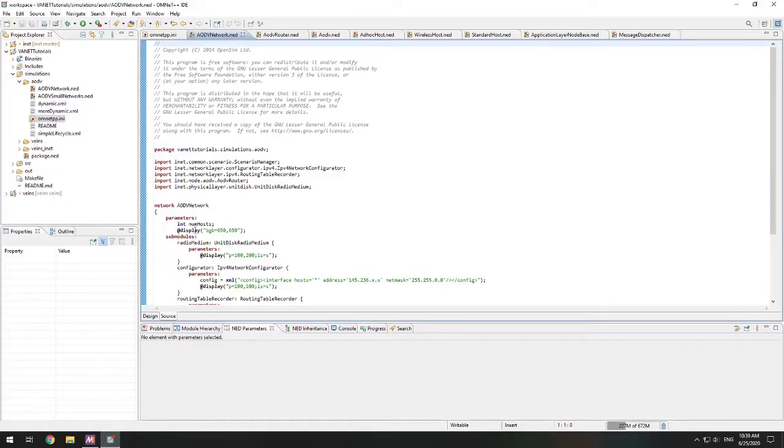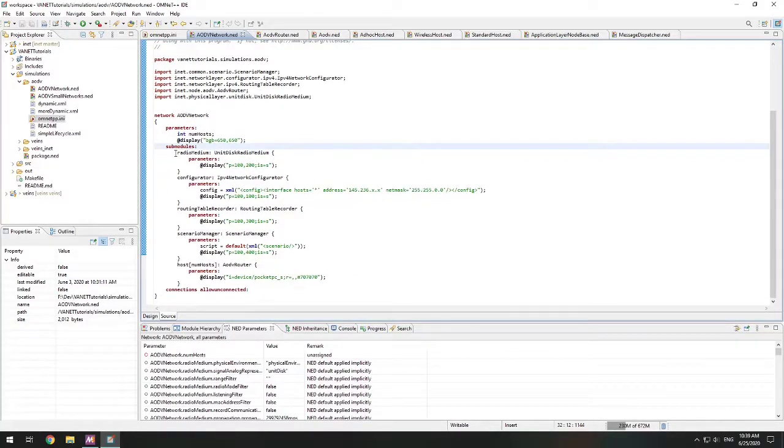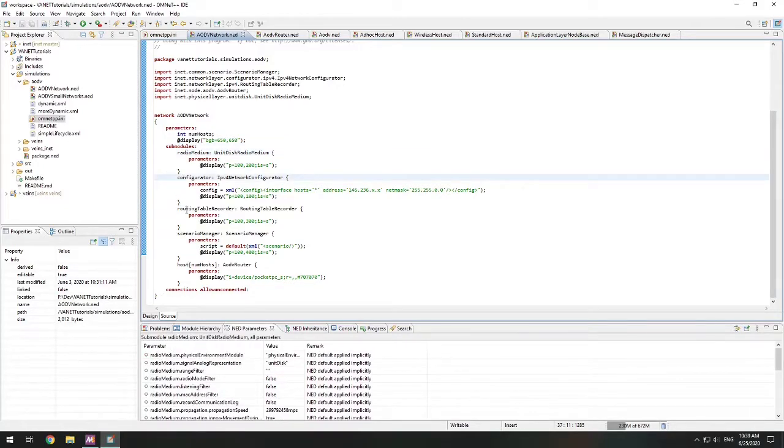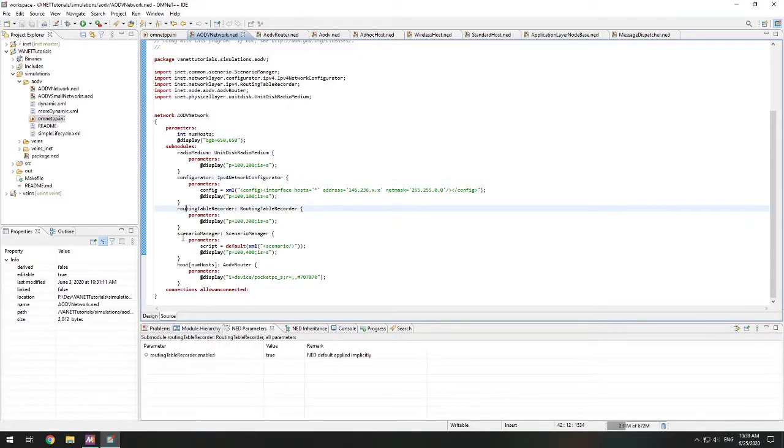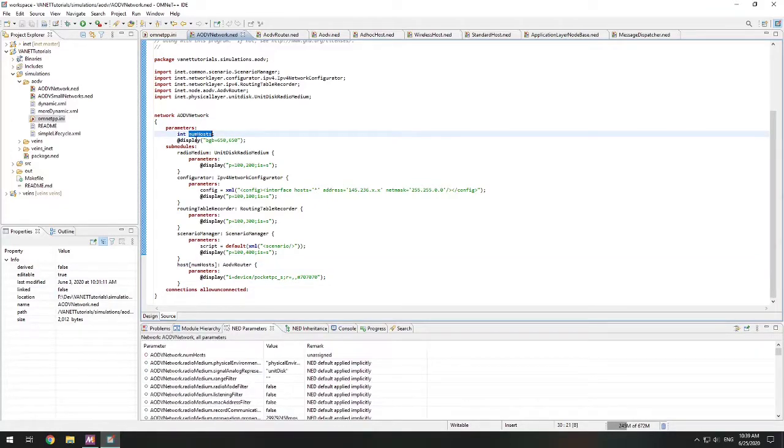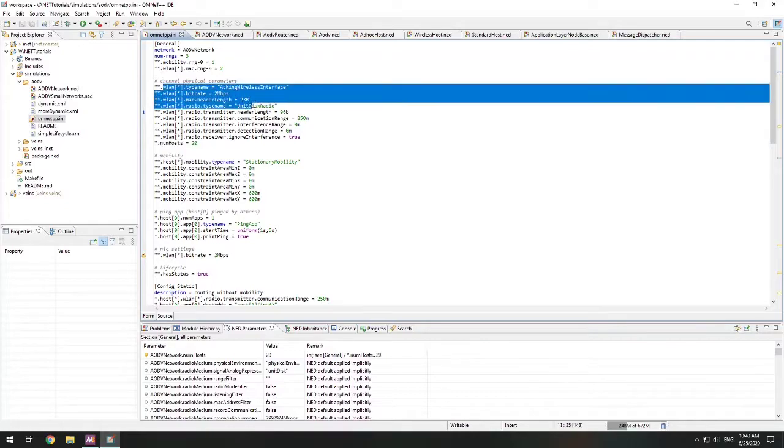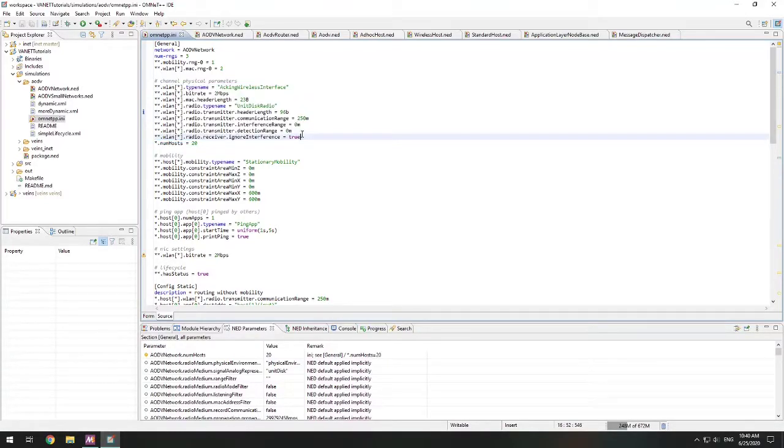Inside AODV network, we define several sub-modules, and each of these sub-modules actually can have their own sub-modules as well. In AODV network we have radio medium, configurator, routing table, scenario manager, and host, which has number of host for its size. Number of host is a parameter that actually gets set in our OMNeT++ INI file. In our OMNeT++ INI file, we're setting the number of host to 20. This is how we're setting all these parameters. If you can see here, all these values that we are setting are actually parameters within either the AODV network file or its sub-modules.